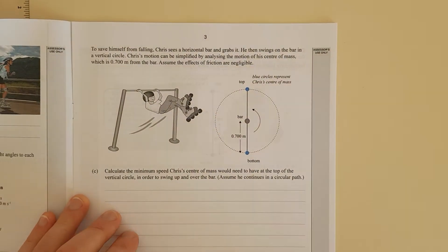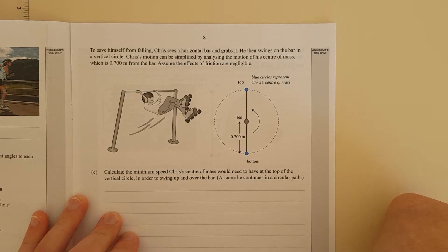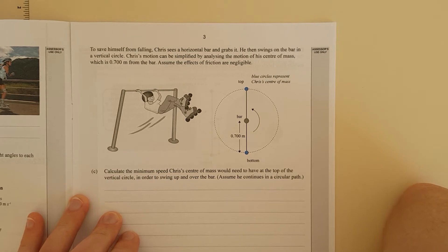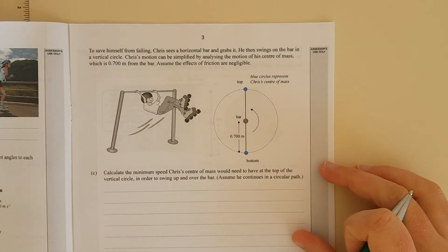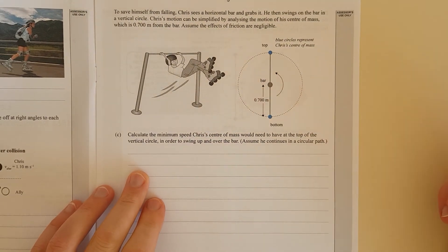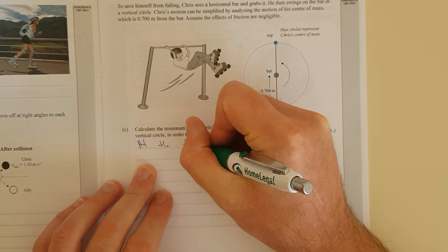To save himself from falling, Chris grabs a horizontal bar and swings on it in a vertical circle. Chris's motion can be simplified by analysis of the center of mass, which is 0.7 meters from the bar. Assume the effects of friction are negligible. Calculate the minimum speed Chris's center of mass would need to have at the top of the vertical circle in order to swing up over the bar.